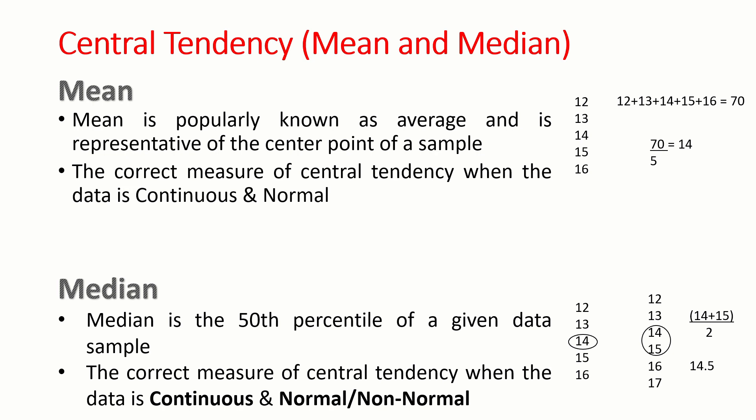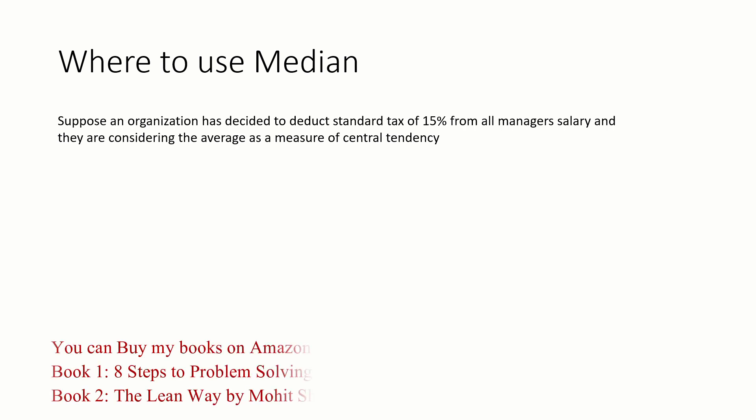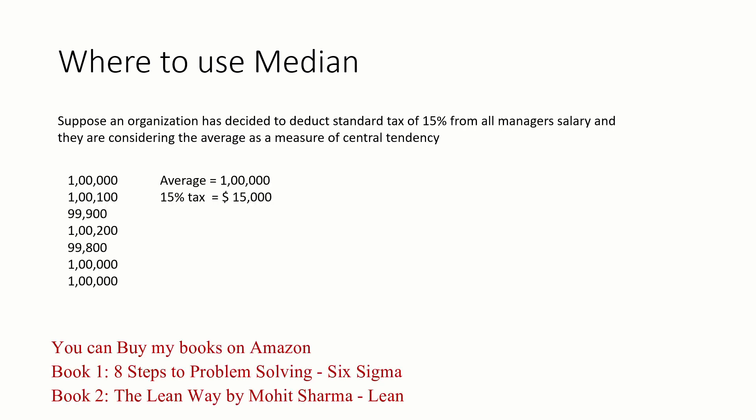It is very important to know when to represent mean and when to represent median for our data set. To understand this, let us take an example. Suppose an organization has decided to deduct a standard tax of 15 percent from all manager salaries and they are considering the average as the measure of central tendency. The average salary is 1 lakh and the 15 percent tax is $15,000 per annum — that is what they are going to deduct irrespective of individual manager salary.